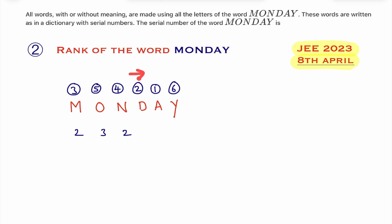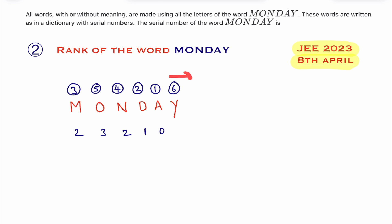Now to the right side of D, which is 2 — how many numbers are there smaller than 1? There is no number to the right side of 1 that is smaller than 1, so we write 0 here. For Y, which is 6, to the right side — how many numbers are there which are smaller than 6? There is no number here, so we write 0.